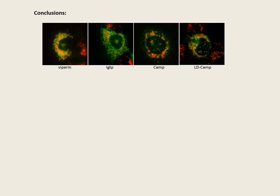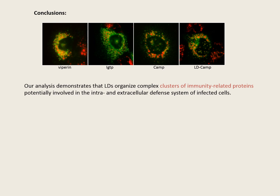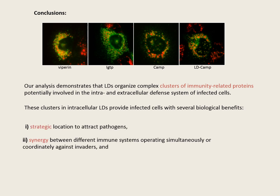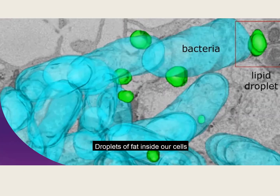In conclusion, our study demonstrates that lipid droplets organize complex clusters of immunity-related proteins potentially involved in the intra- and extracellular defense system of infected cells. These clusters and lipid droplets provide infected cells with several biological benefits: a strategic location to attract pathogens, synergy between different immune systems operating simultaneously or coordinately against invaders, and safety for the rest of the cellular organelles by sequestering cytotoxic compounds. I would like to finish by showing a short video made by Rob Parton and the University of Queensland to illustrate what I've shown today and how beautiful cell biology is. Thank you for your attention.